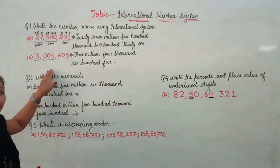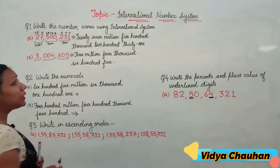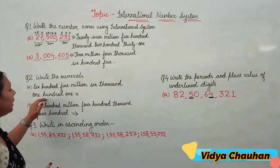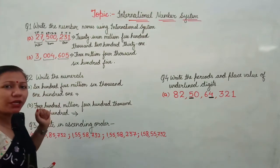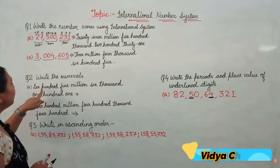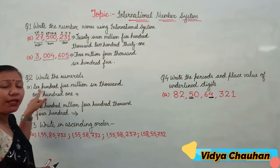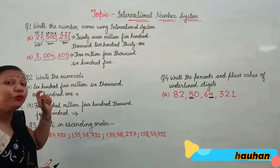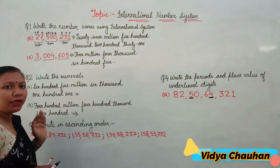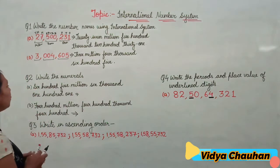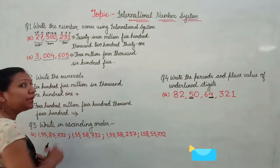This is the number name for both numerals according to the international system. I hope it is clear to all of you. Moving to the second question: write the numerals for the given number name. The number names are given and you have to write the numeral. When writing the numeral, first check which group or period you need to go up to. Reading the first one: it is 605 million, so we move to the millions period.